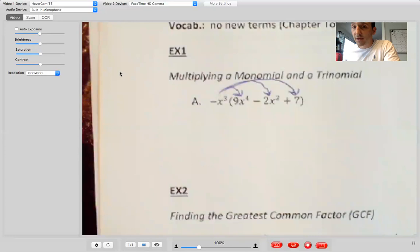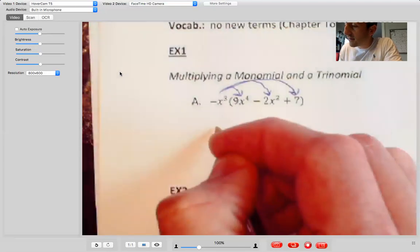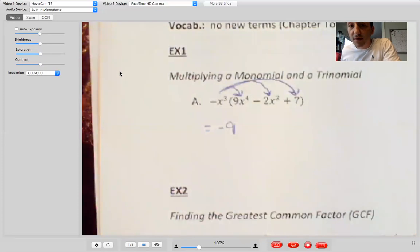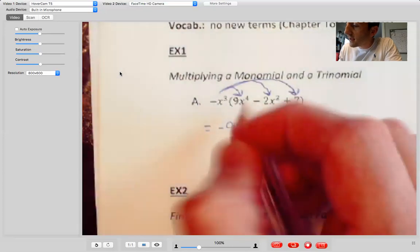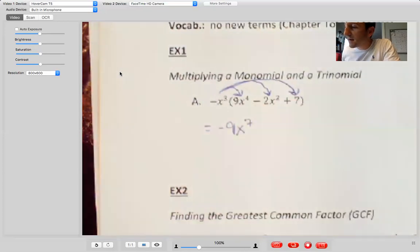So our first product is going to be negative 1 x cubed times 9 x to the 4th. Negative 1 times 9 is negative 9. And then remember our exponent rules. So if we take x cubed times x to the 4th, we're adding exponents. So when I multiply those together I get x to the 7. That's my first term.